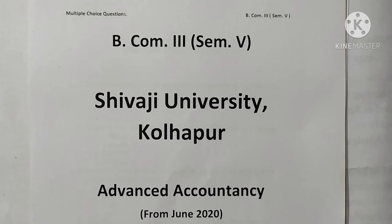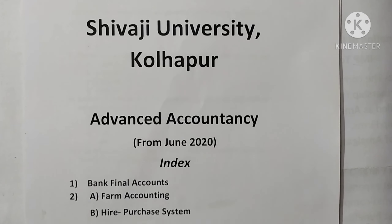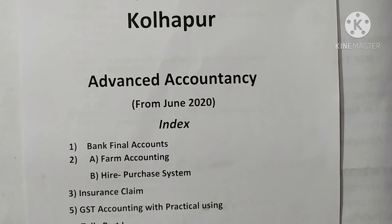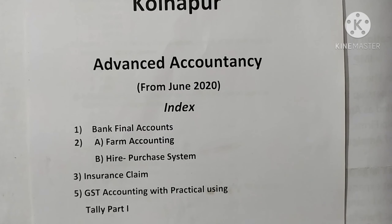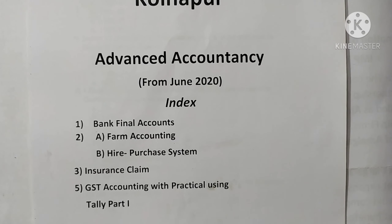Welcome to become third year students, Semester 5th, Shivaji University Kolhapur, Advanced Accountancy. Units are introduced from June 2020. Units covered include bank accounts, farm accounting, hire purchase system, insurance claim, and GST accounting with practical using Tally, Part 1.